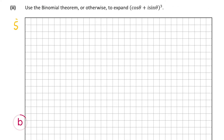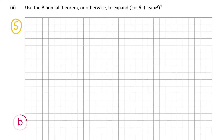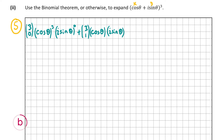Now let's look at part b2, which is also worth five marks. This wants us to use the binomial theorem to expand (cosθ + i sinθ)³. The binomial theorem is also on page 20 — it's the last formula on the page. We start with 3 choose 0 times cosθ to the power of 3 times (i sinθ)⁰, added to 3 choose 1 times cosθ squared times (i sinθ)¹, and this pattern repeats with the final step at 3 choose 3.